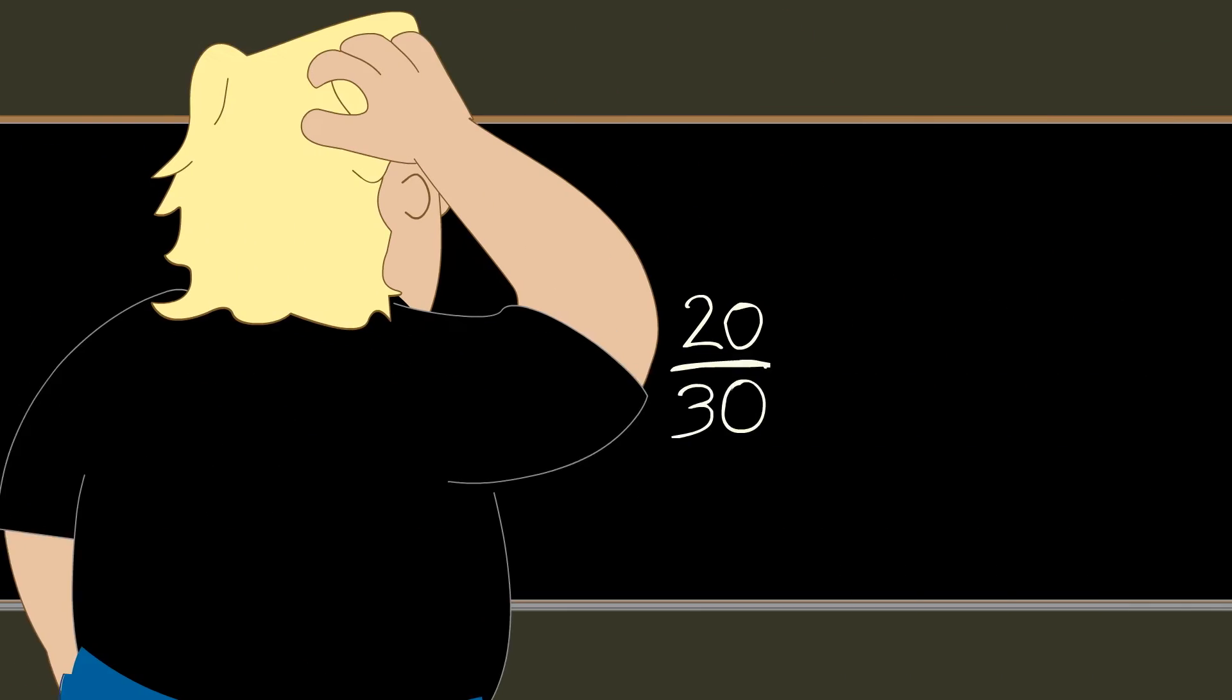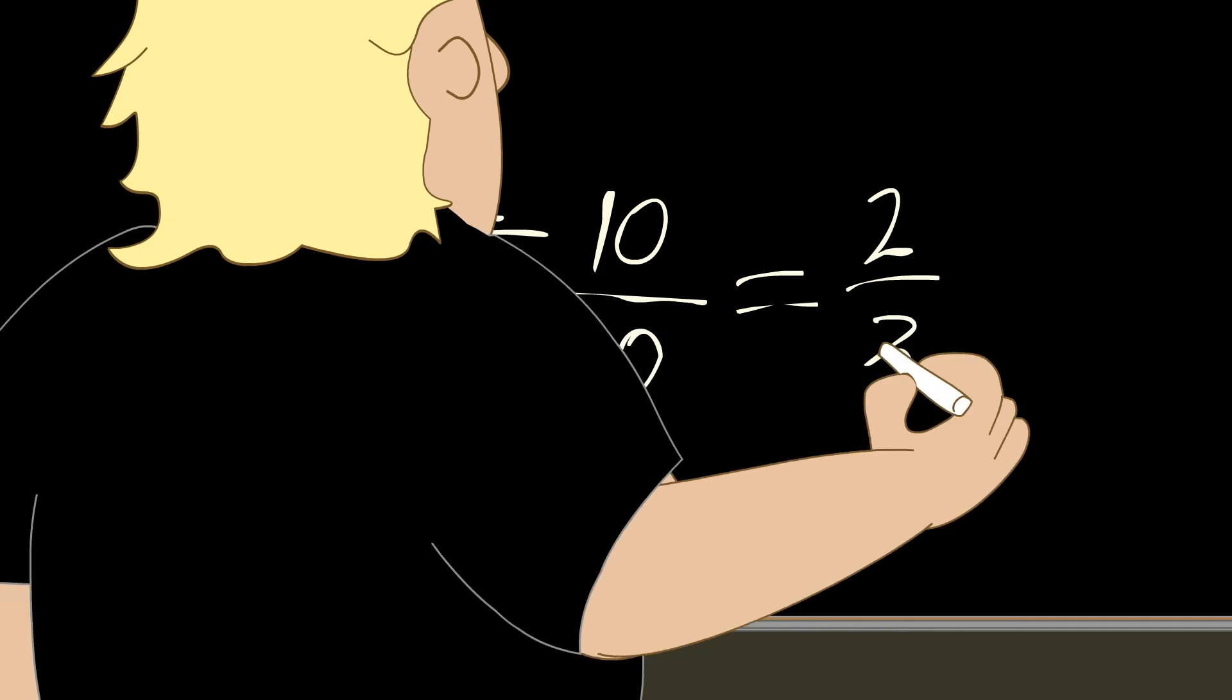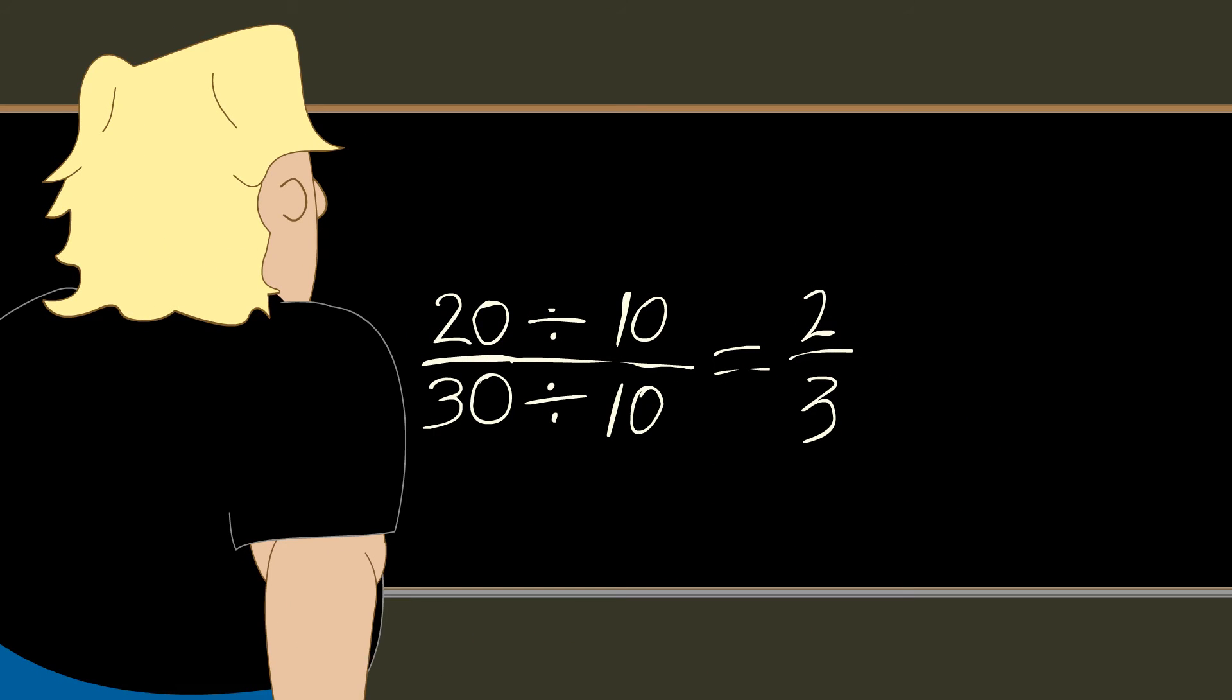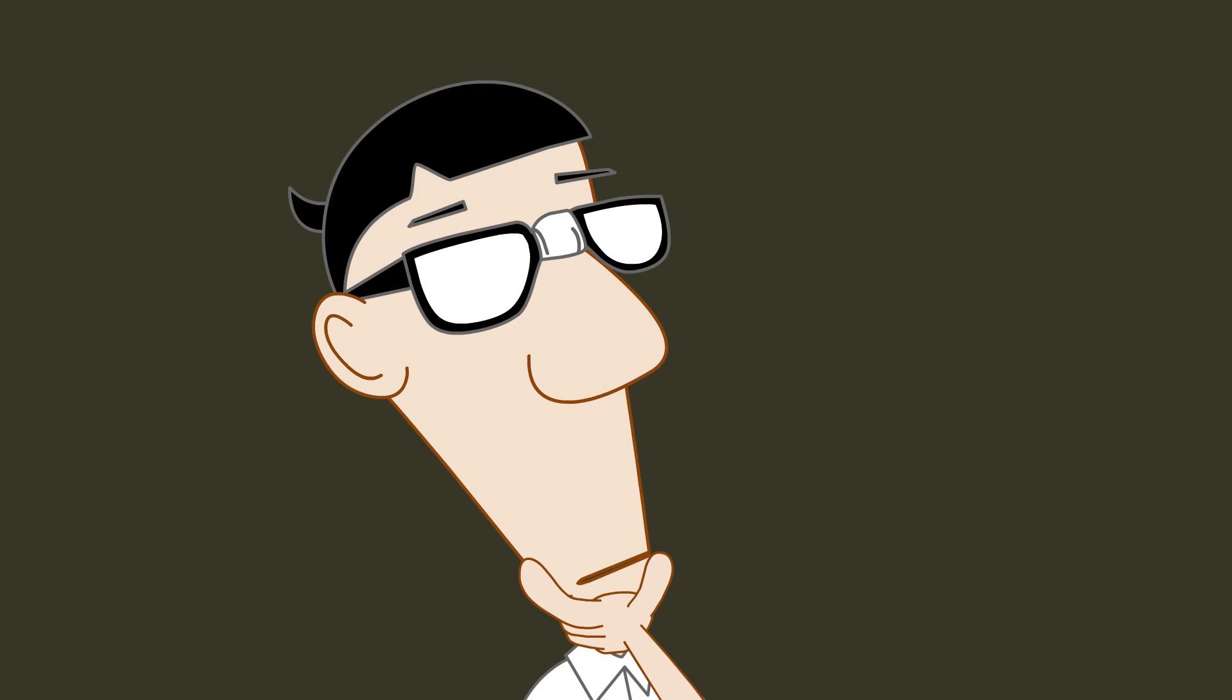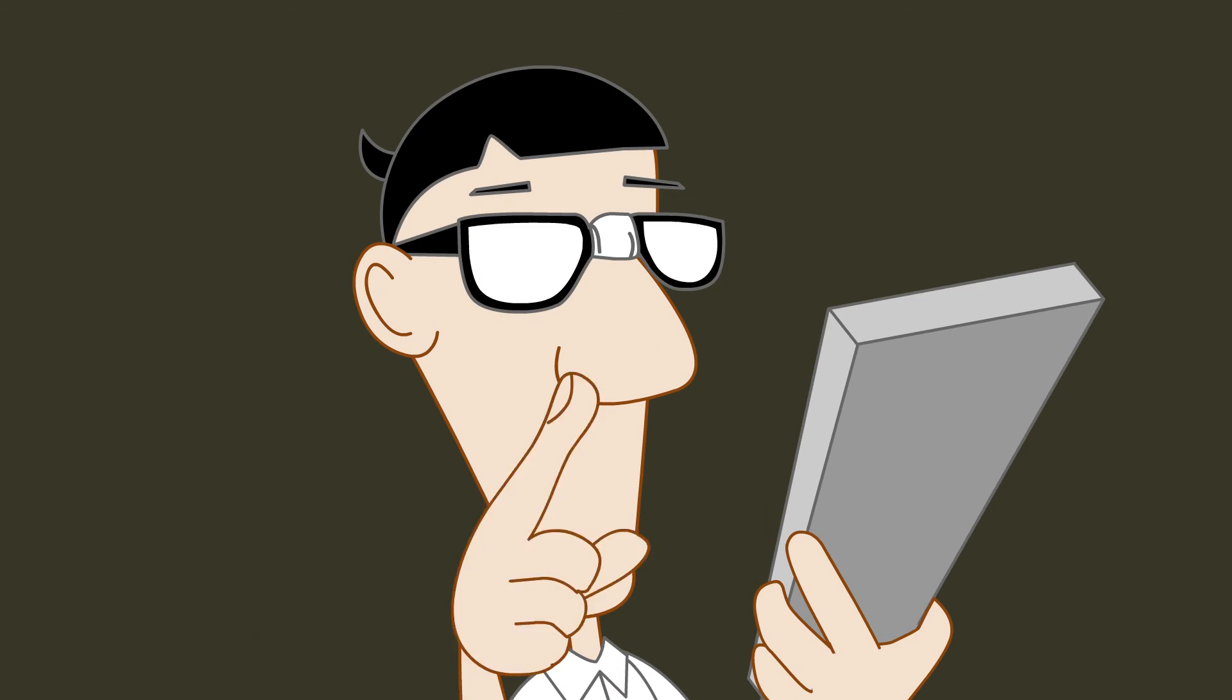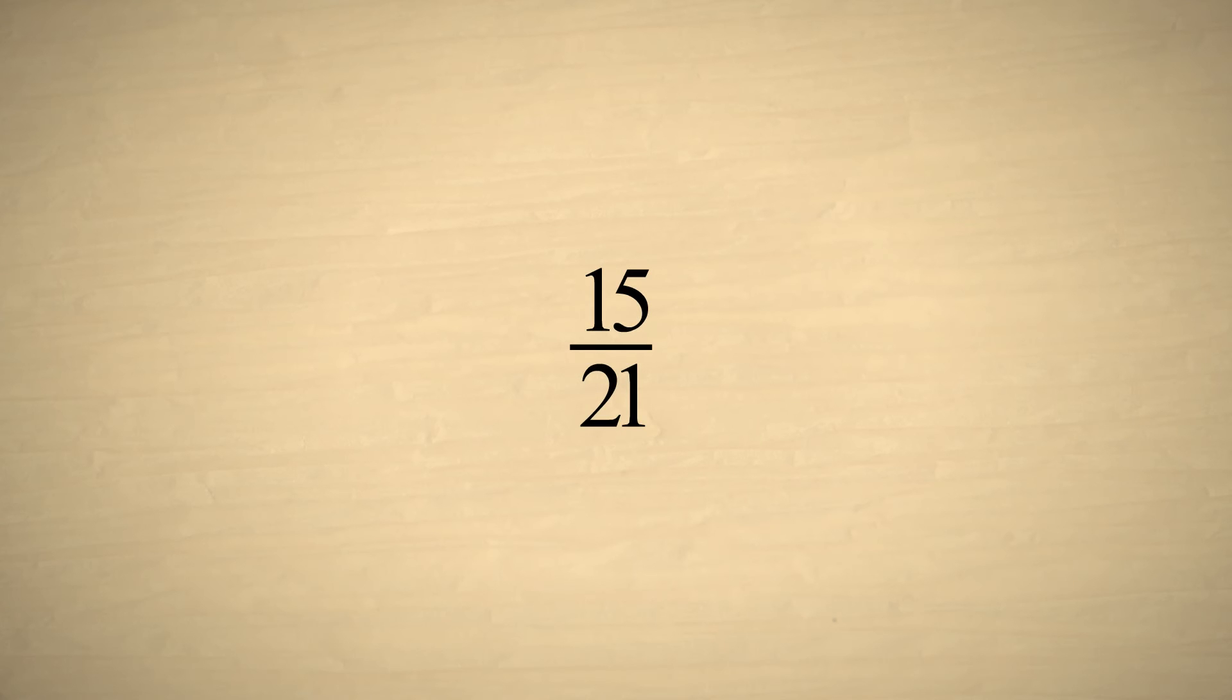And most people would recognize that the numerator and denominator of twenty-thirtieths are both divisible by ten. But sometimes, it's not so obvious. The surest way to determine whether or not a fraction can be reduced is to factor the numerator and denominator.